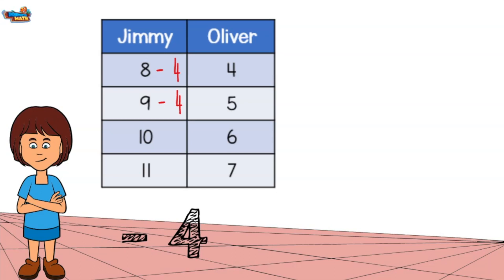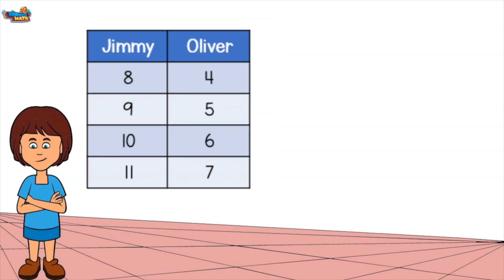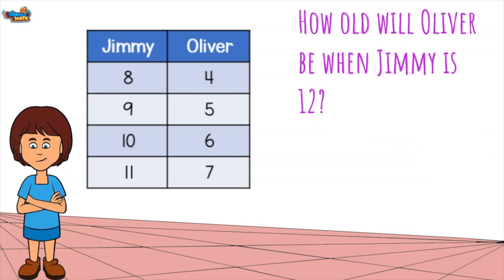Now, let's put the rule to use. How old will Oliver be when Jimmy is 12? The rule tells us to subtract 4 from Jimmy's age of 12 to find Oliver's age. Oliver will be 8.